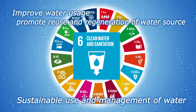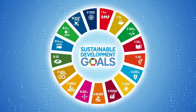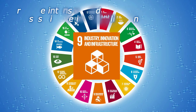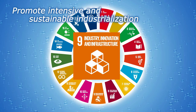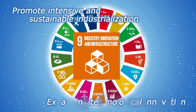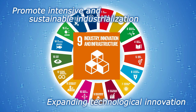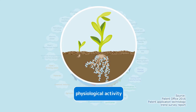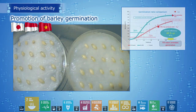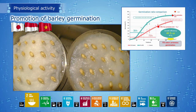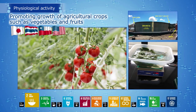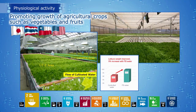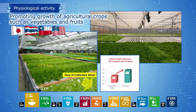This will lead to sustainable management of water. Furthermore, in the agribusiness and food field, this technology can contribute to Goal 9: build resilient infrastructure, promote inclusive and sustainable industrialization and foster innovation. The effect of bioactivity can be utilized for agriculture, food and drinking water. For example, barley germination is promoted. Meanwhile, growth promotion and yield increase for crops such as tomatoes and lettuce have been reported from various countries.